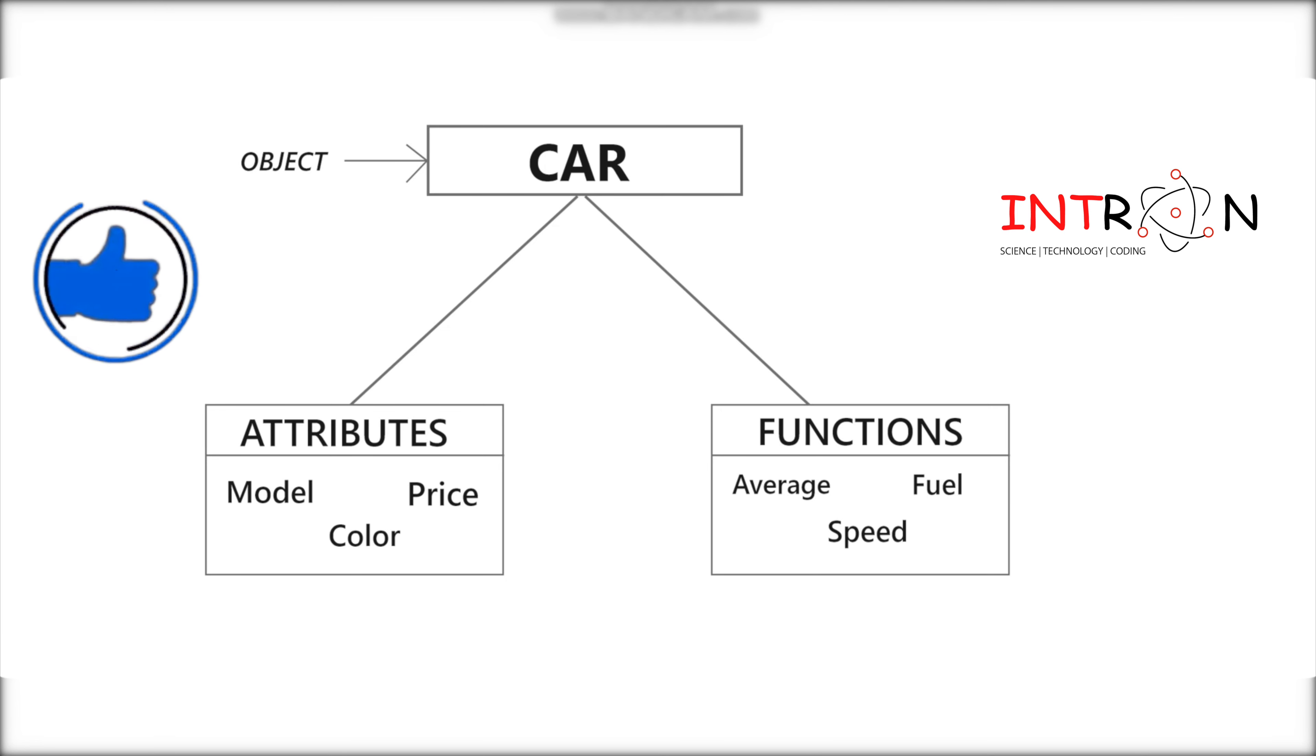It will have different properties like model, price, color, and also different functions it will have like average, fuel, speed. Model, price, color, these are all attributes. And what are its functions? How much average it gives, how much fuel it requires, how much speed it can take. These are all the functions.